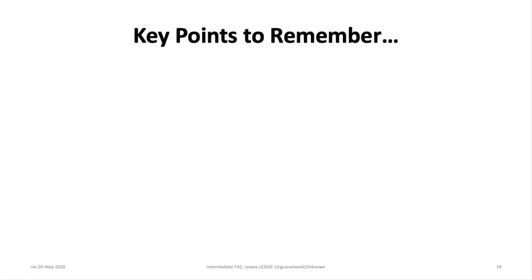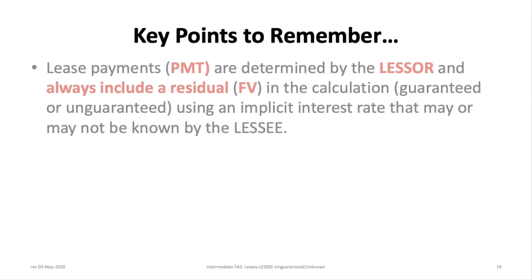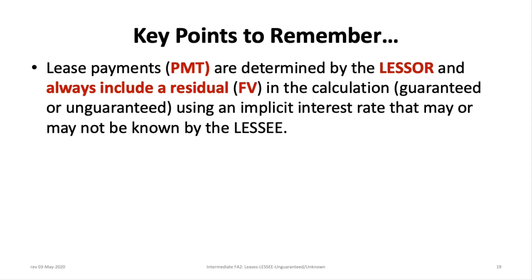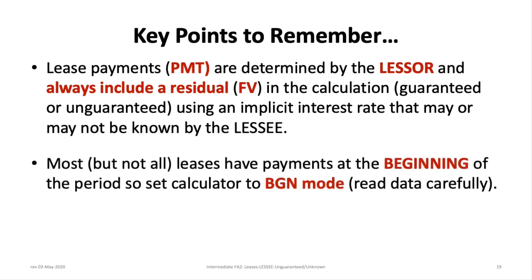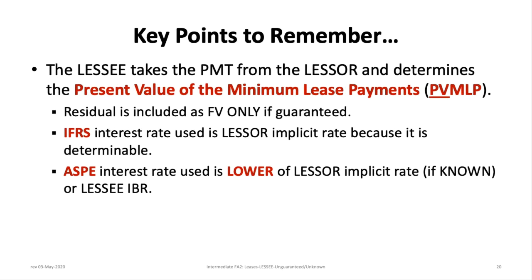Key points to remember: Lease payments (PMT) are determined by the lessor and always include a residual (FV) — whether guaranteed or unguaranteed — using the lessor's implicit rate, which may or may not be known to the lessee. Most leases have payments at the beginning of the period, so set the calculator to BGN mode. The lessee takes the PMT from the lessor and calculates the present value of minimum lease payments, including a residual only if it is guaranteed. Under IFRS, the lessee uses the lessor's implicit rate. Under ASPE, the lessee uses the lower of the lessor implicit rate (if known) or the lessee's incremental borrowing rate.